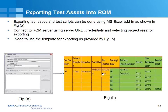For each of these spreadsheets, you also have a config file. The configuration file basically contains instructions which tell RQM to pick a specific column as the test case name and another column as the description.